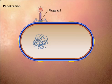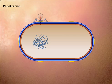In the penetration stage, the enzyme lysozyme located in the tip of the phage tail degrades a small portion of the cell wall. The DNA in the head of the phage is injected into the cell and the phage coat remains on the outside.